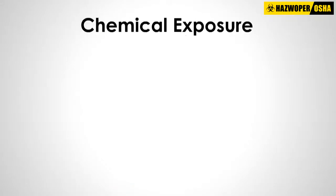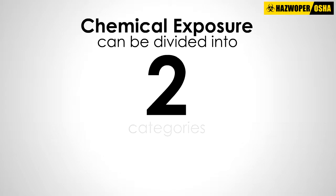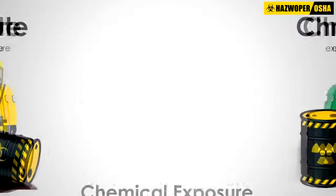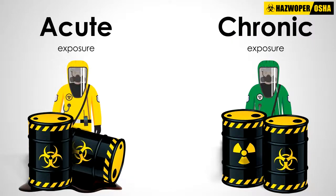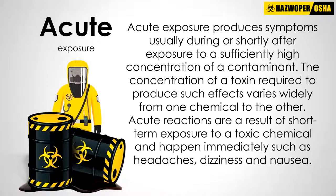Any type of chemical exposure can be divided into two categories: acute exposure and chronic exposure. Acute exposure produces symptoms usually during or shortly after exposure to a sufficiently high concentration of a contaminant. The concentration of a toxin required to produce such effects varies widely from one chemical to the other. Acute reactions are a result of short-term exposure to a toxic chemical and happen immediately, such as headaches, dizziness, and nausea.